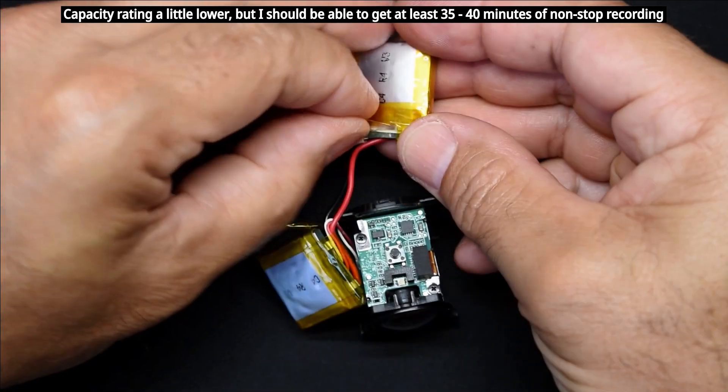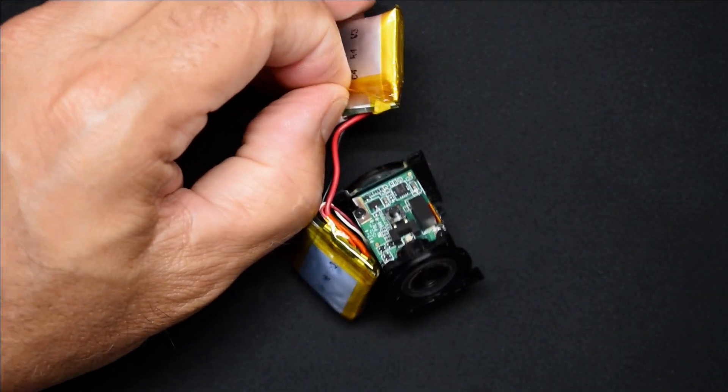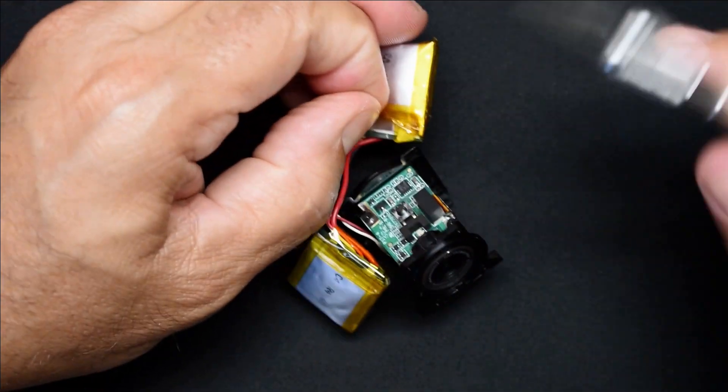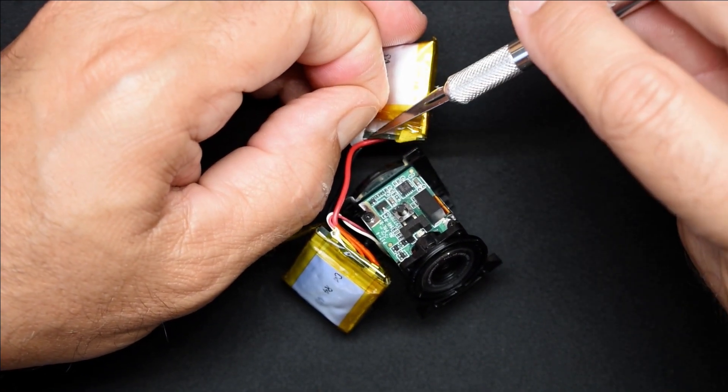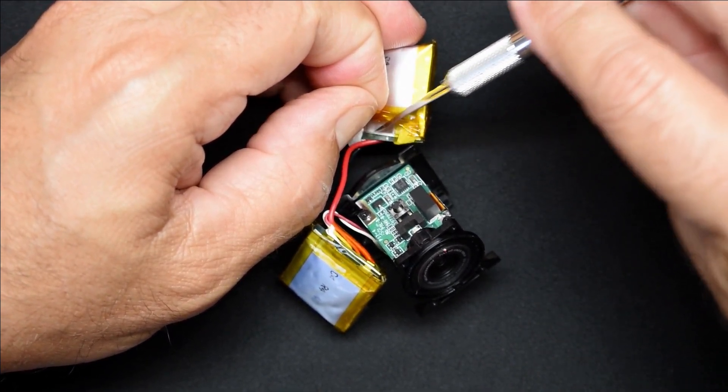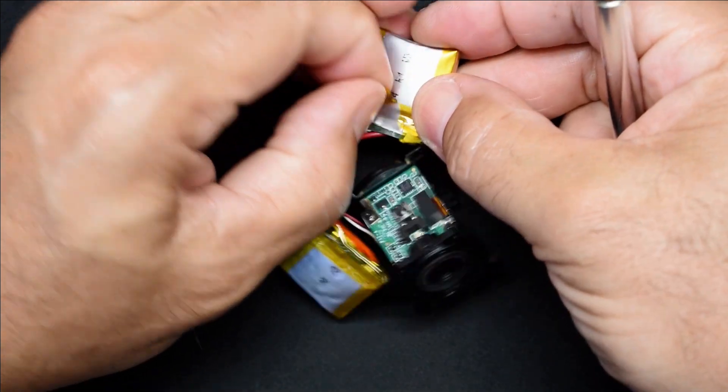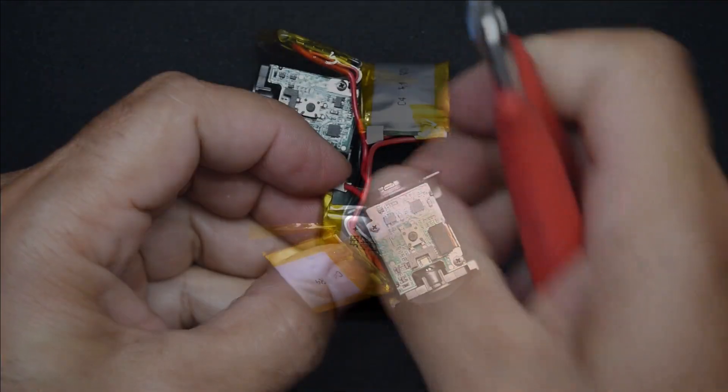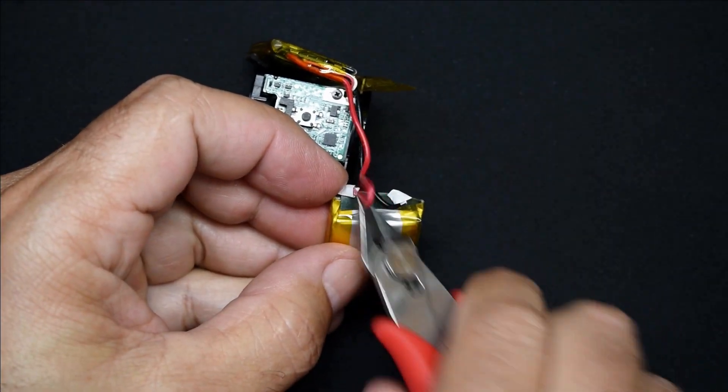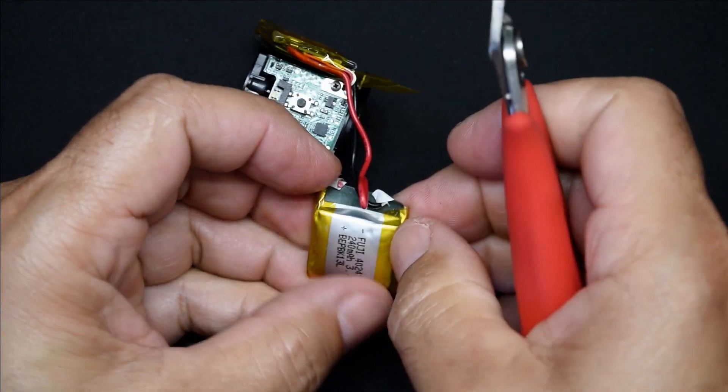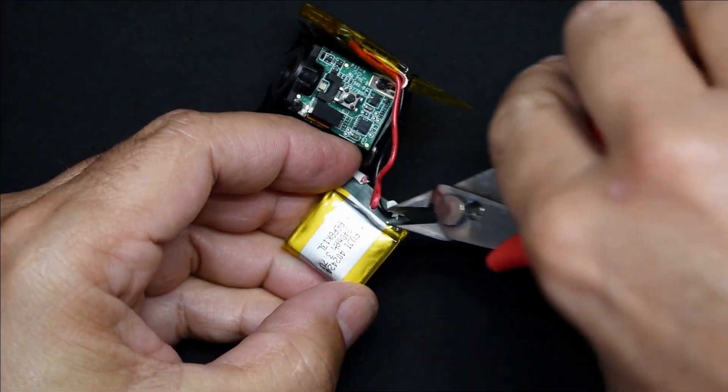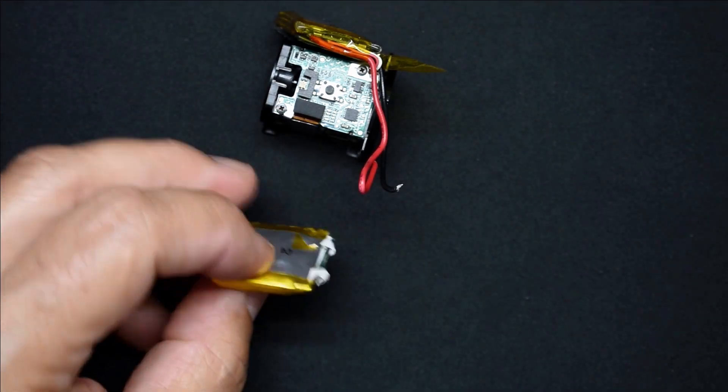Let's put these to the side. This Kapton tape is pretty strong stuff. I don't want to cut the lipo. I just want to trim this. Let's just trim this positive off. And the negative.